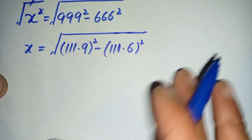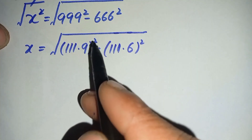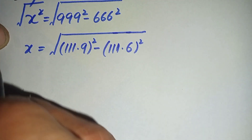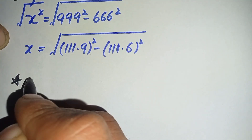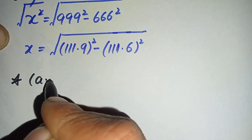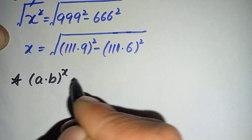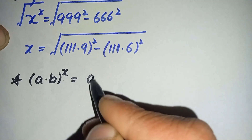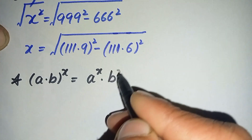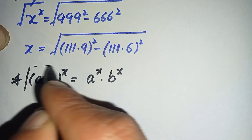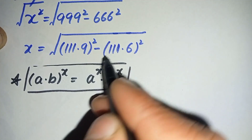Now in the next step, in these two terms we will use an exponent math property to spread this power over both the bases. So here we will use this exponent math property.